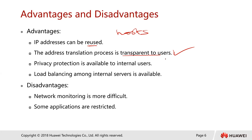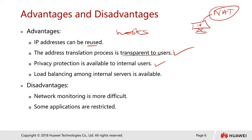NAT is transparent to end users. Privacy protection is available to internal users because the protection is provided for all internal network users. External network users cannot directly obtain the IP address of your machine because your private IP address has been translated — it has been NATted. So even if they want to initiate an attack, it won't be straightforward. You can also configure multiple internal servers for load balancing and to reduce the pressure on each server in case of heavy traffic.